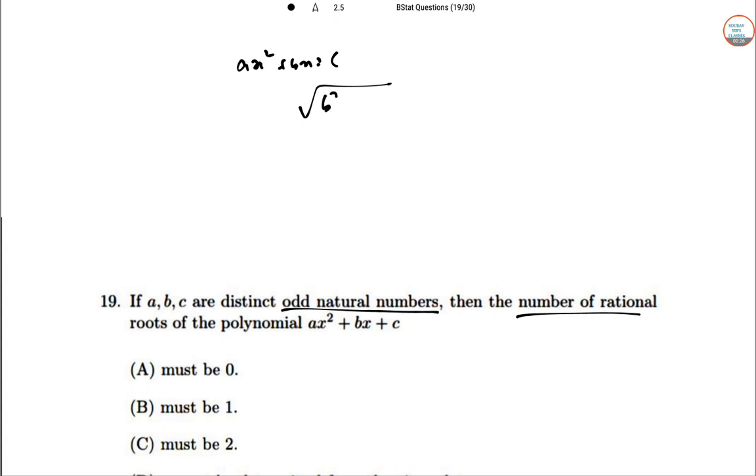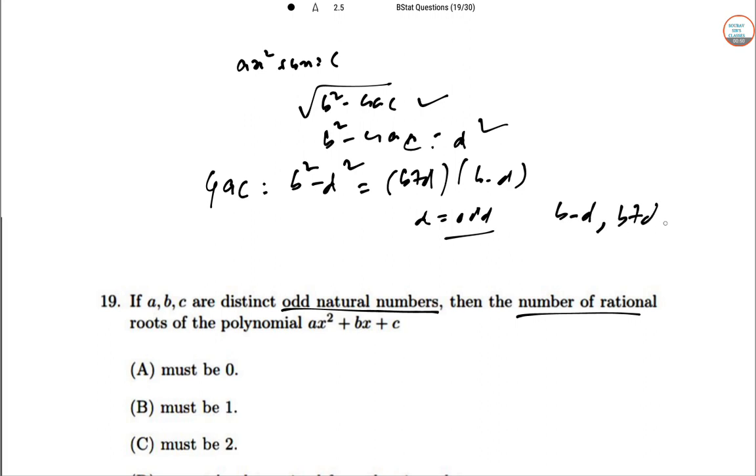For rational roots of AX² + BX + C, if √(B² - 4AC) is rational, it is only possible when the discriminant is a perfect square, that is B² - 4AC = D². So 4AC = B² - D² = (B+D)(B-D). We can observe that D is odd, hence B-D and B+D both are even.